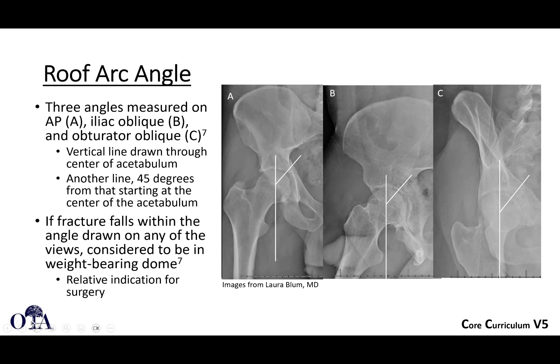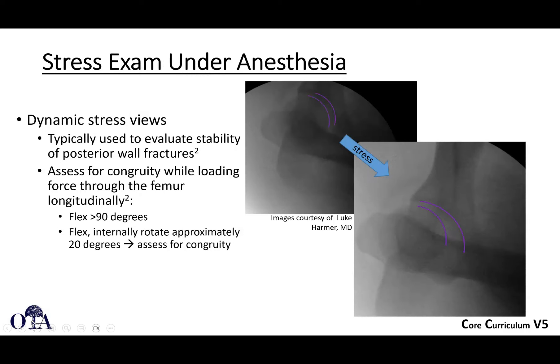Another important radiographic characteristic to consider is how the joint looks under stress radiograph. When you have small posterior wall fractures and you're not sure if that alone is an indication for surgery, you may want to assess how stable it is under dynamic conditions. Put the patient on the operating table and take an obturator oblique view to look at the posterior wall. You flex to 90 degrees, internally rotate, and apply stress — almost like trying to dislocate the hip — then assess for congruity. If the hip subluxes, you consider it a positive stress radiograph, and that posterior wall should likely be fixed if the hip is unstable.